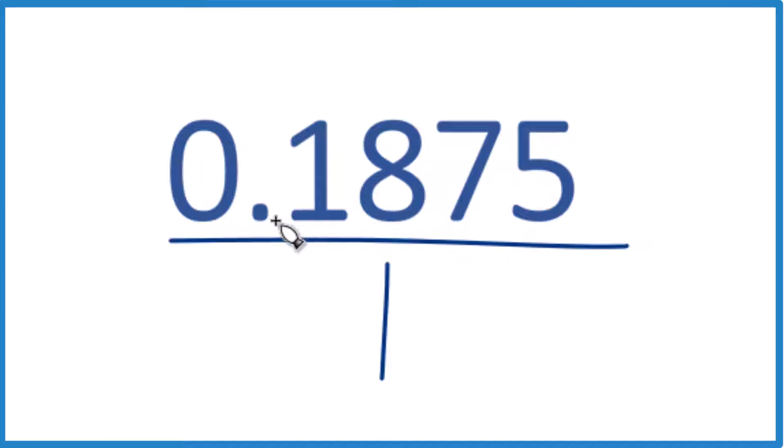What we need to do though is get rid of this decimal point up here, make this a whole number. So if we multiply by 10, that would give us 1.875, times a hundred, times a thousand. If we multiply by 10,000, that would give us a whole number up here. So let's do that.